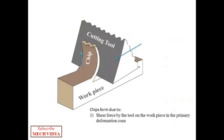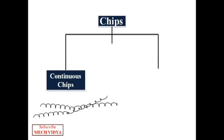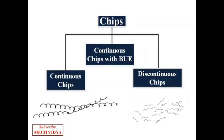In this video, we will discuss three types of chips formed during machining: the continuous chips, the discontinuous chips, and the continuous chips with built-up edge.